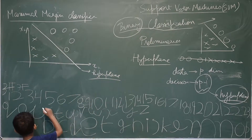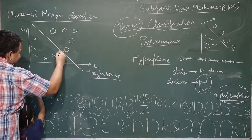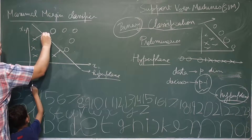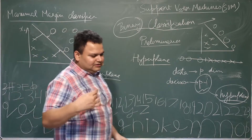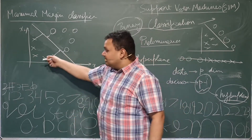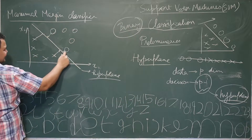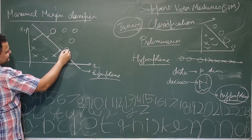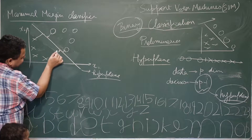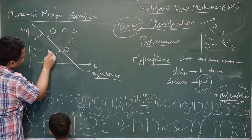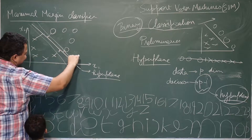What should be the properties of the hyperplane? The margin should be the maximum — the distance between this and the plane, between any of these points. If I draw the distance between the hyperplane and the closest points on either side, that becomes your minimum distance. Your margin in this case looks like this — this is your margin on either side.